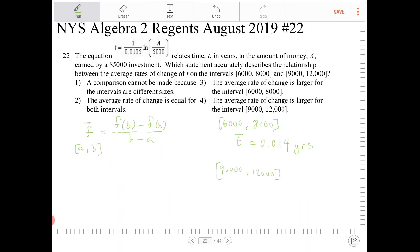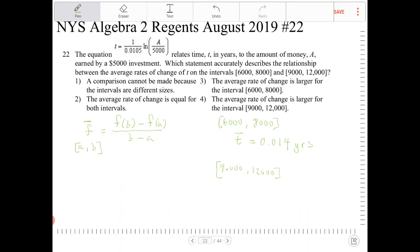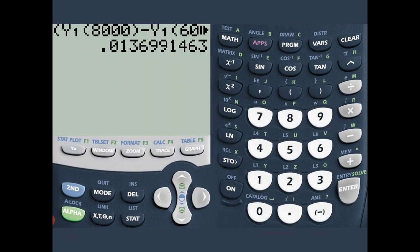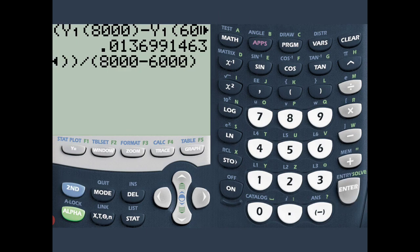And let's do the same thing again for 9,000 to 12,000. So let's go back over here. Rather than retyping all the stuff in again, I'm going to press 2nd and enter. That will recall the last step.